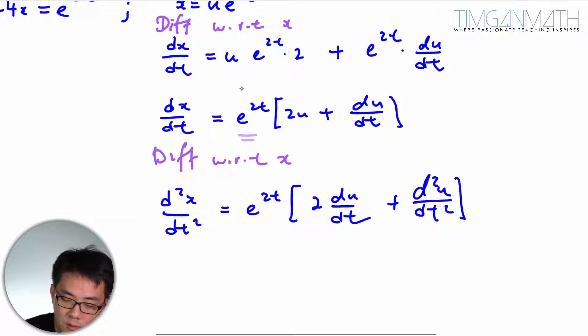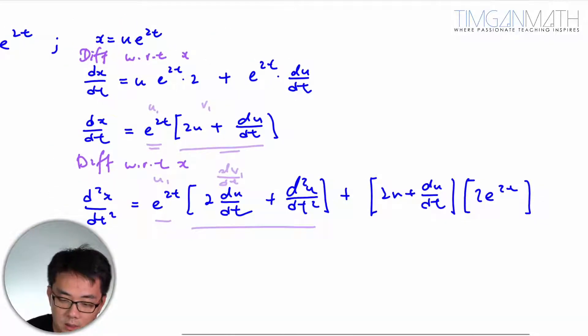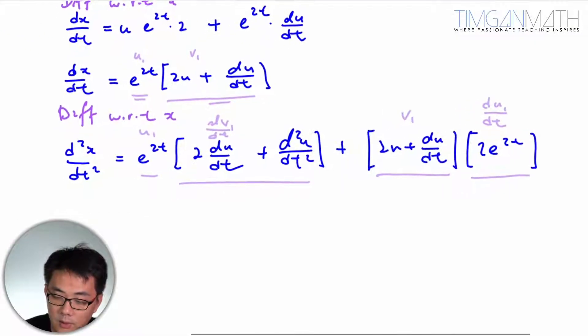Let me color code the product rule for you. Call the parts u and v. This is v1, dv/dt, plus the v2 term with e^(2t). So this gives the full second derivative expression.